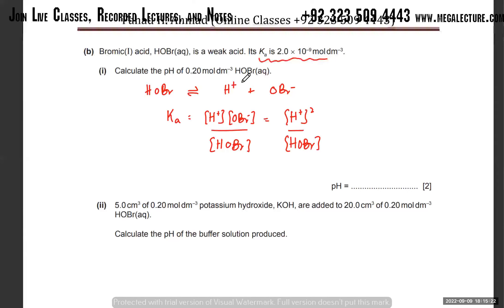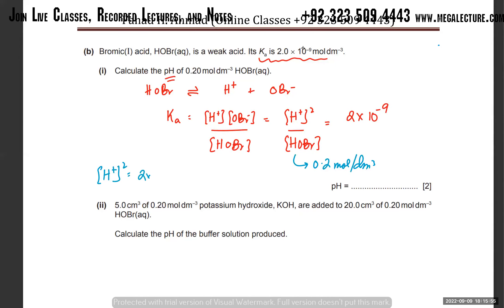Since both ions have equal concentration, instead of writing OBr⁻ separately, you can just square H⁺. Ka = 2 × 10⁻⁹, and [HOBr] = 0.2 mol dm⁻³. So [H⁺]² = 2 × 10⁻⁹ × 0.2. You just have to find [H⁺]. To get rid of the square, take the square root of the whole thing.